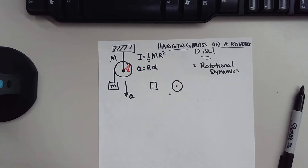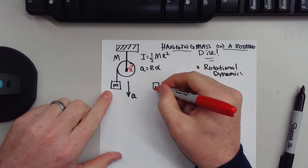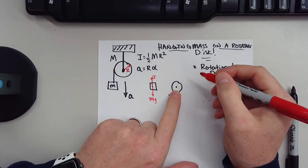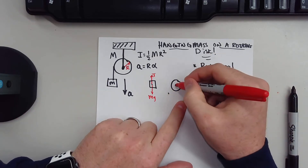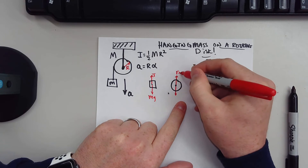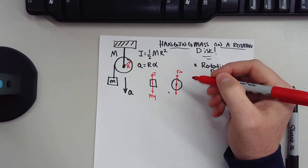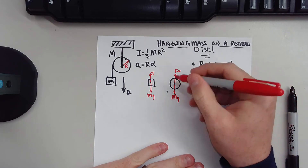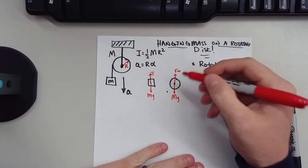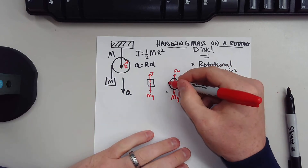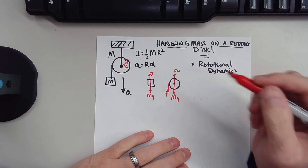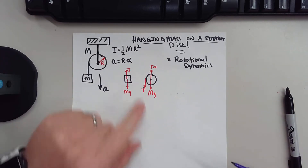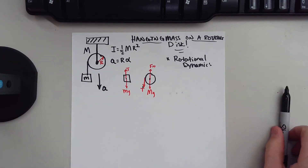The hanging mass is the simplest one. We have little mg pulling down, and there is a tension pulling up. On our rotating disk, there is a normal force — or a tension really in this case — but I'm just going to call it a normal force to make this easier. You have big M times G, and these are equal and opposite because the disk isn't moving up and down — it's stationary. But there is a tension pulling down on the left-hand side, and that's what's causing this object to move and producing a torque.